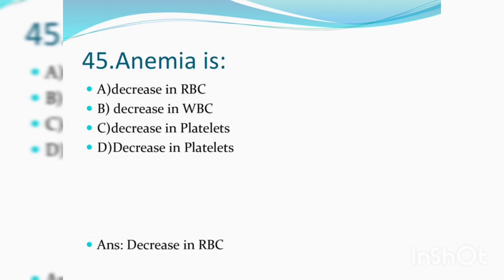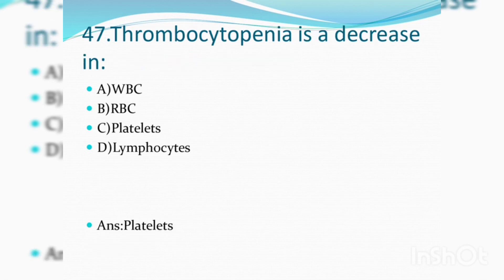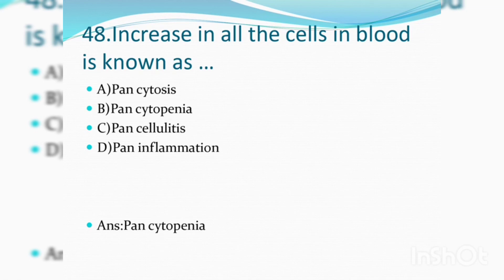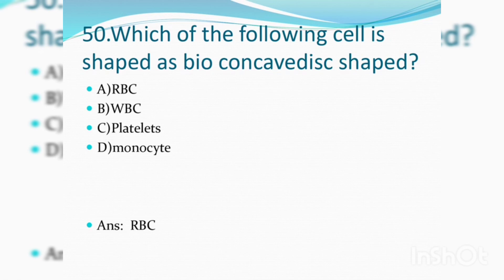Anemia is a decrease in RBC. Which of the following cells are elevated in leukemia? Answer: WBC. Thrombocytopenia is a decrease in platelet count. Increase in all the cells in blood is known as pancytopenia. Which of the following objectives is used for peripheral smear examination? Answer: Oil immersion. Which of the following cells is shaped as a biconcave disc? Answer: RBC.